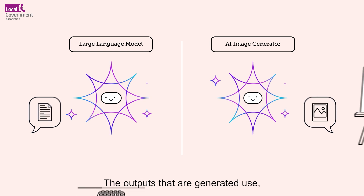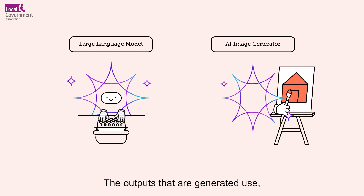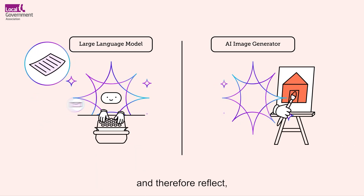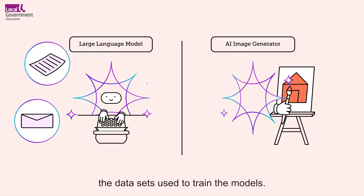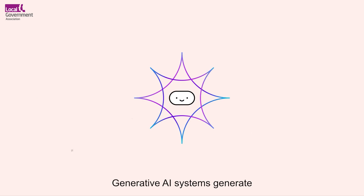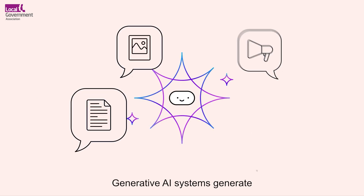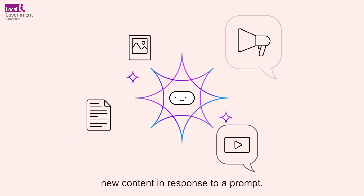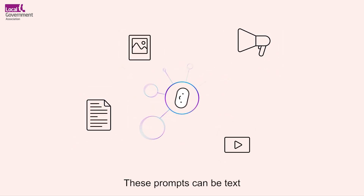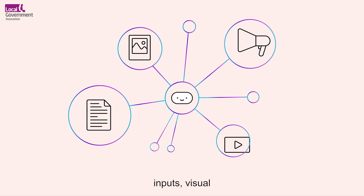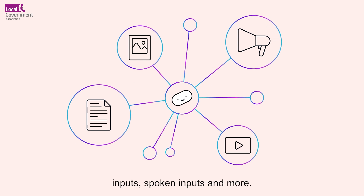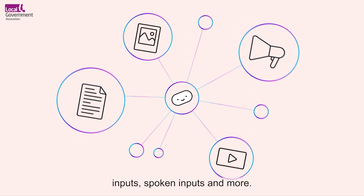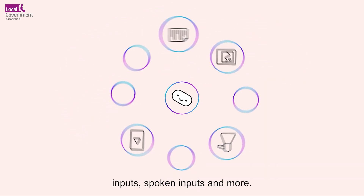The outputs that are generated use, and therefore reflect, the datasets used to train the models. Generative AI systems generate new content in response to a prompt. These prompts can be text inputs, visual inputs, spoken inputs and more.